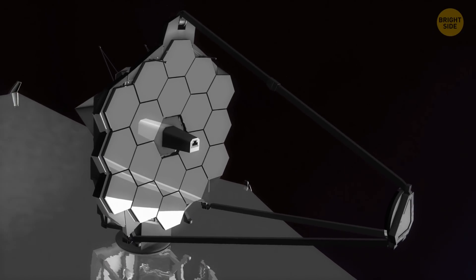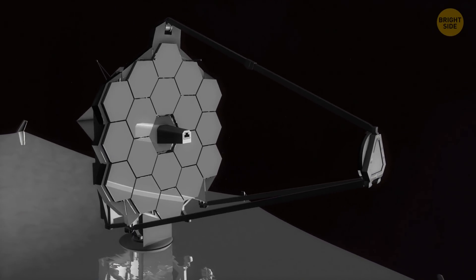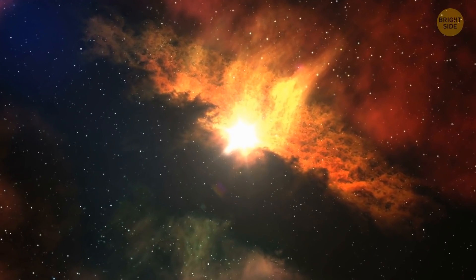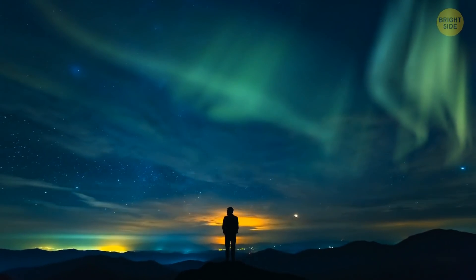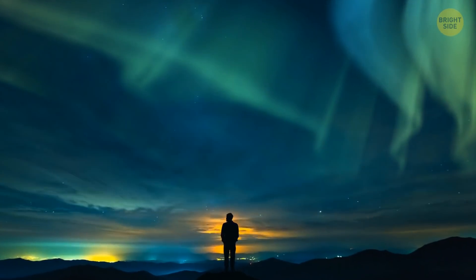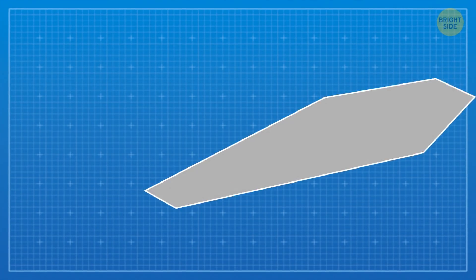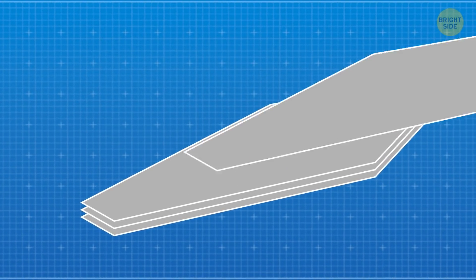In space, direct sunlight is very hot, and shadow is very cold. Therefore, the James Webb Space Telescope brought along its own high-tech sunshield. It's huge, too. As big as a tennis court huge.